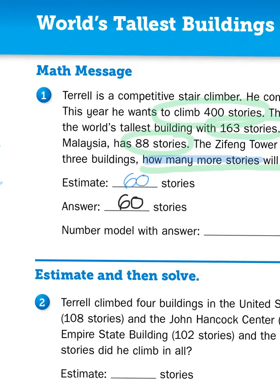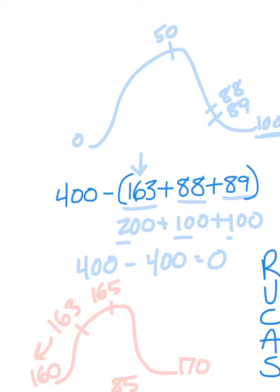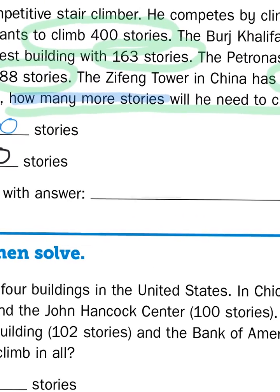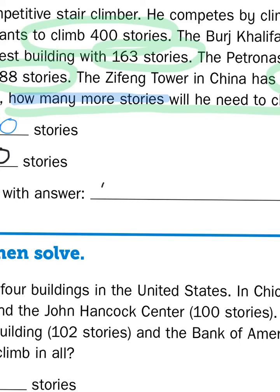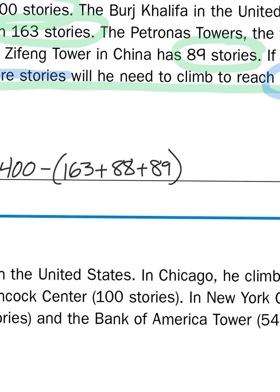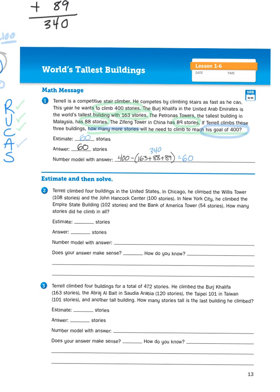Now the last thing I need to do is create a number model with an answer. I just transfer all of this and write it down here. I did the work already by writing out the problem with my scratch work. I just need to supply the answer I came up with. So 400 take away the total of 163 plus 88 plus 89 gives me a total of 340 which leaves me an answer of 60. And that's how I go about solving that problem.